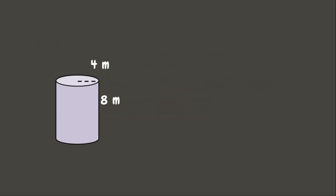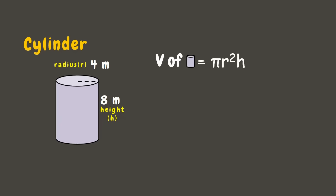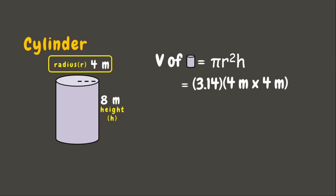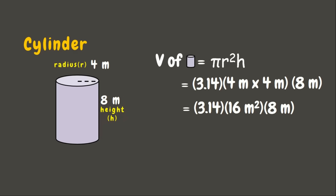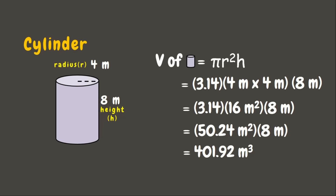Now let's have another example — a cylinder whose radius measures 4 meters and height is 8 meters. The formula for the cylinder's volume is V = πr²h. Using π = 3.14: 3.14 × (4 m)² × 8 m. First, 4 × 4 = 16 square meters. Then 3.14 × 16 = 50.24 square meters. Multiplying by 8 meters gives 401.92 cubic meters. That's the volume of this cylinder.